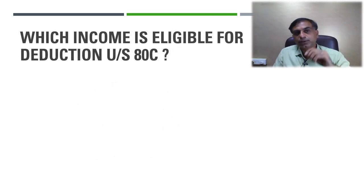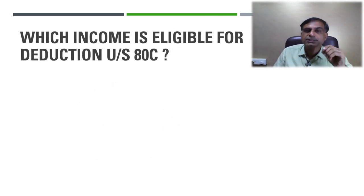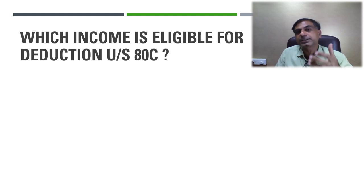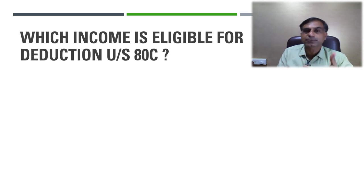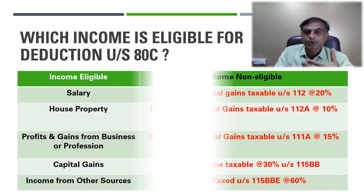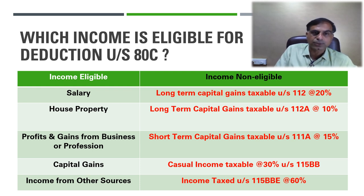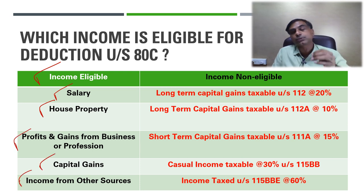Which income is eligible for deduction under Section 80C? There are five heads of income: salary income, house property income, business or profession, capital gain, and income from other sources. In my opinion, income from all these heads is eligible for deduction under Section 80C — so you can claim against all your income.